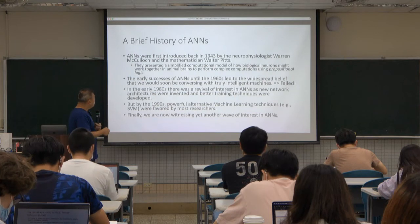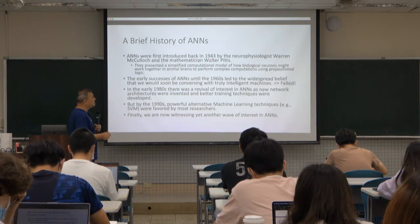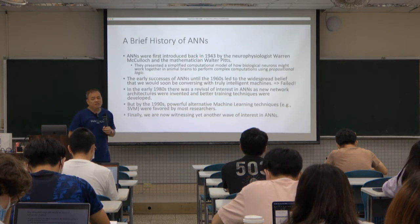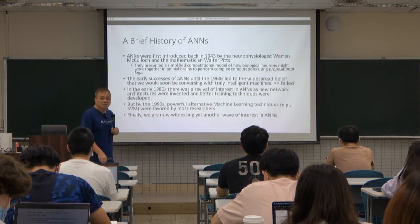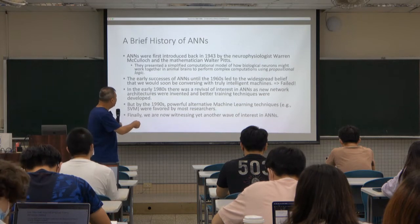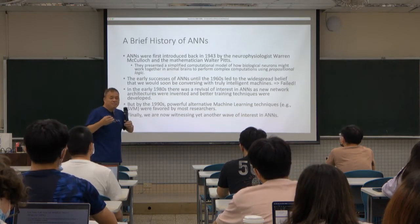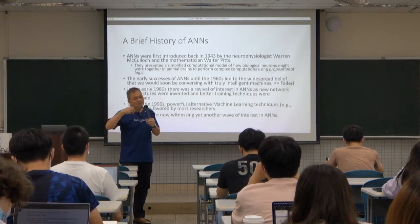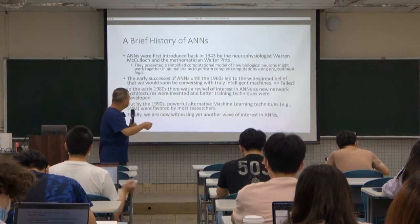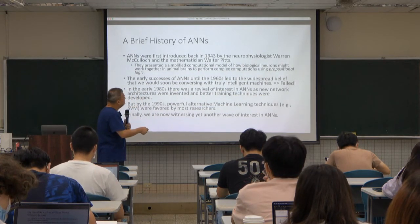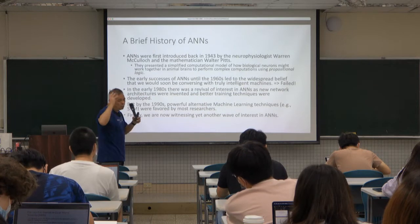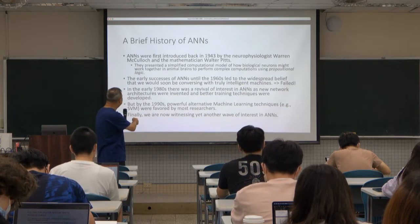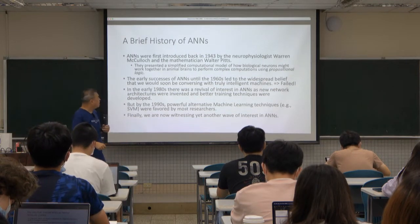Artificial neural networks were first introduced in 1943, so this is really not a new thing — it has been there for close to 80 years already. At that time, very few people had a deep understanding of brain architecture. This concept was brought up by neurophysiologists — doctors who work on brain research. This person was Warren McCulloch, and the mathematician Walter Pitts.